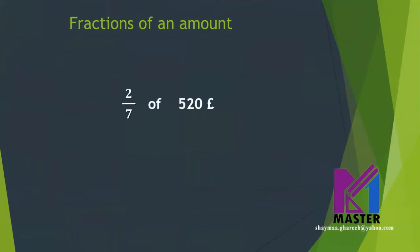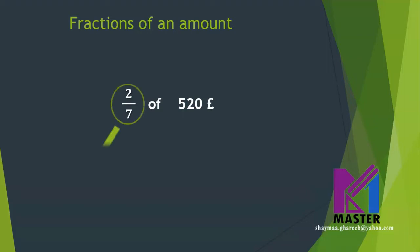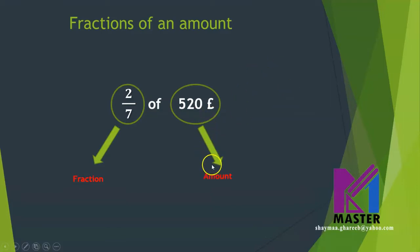What are fractions of an amount? Look at this question: 2 sevenths, or 2 over 7, of 520 pounds. So this is a fraction and this is the amount. Fractions of an amount means part of an amount. So we need to know how much exactly 2 sevenths of 520 pounds is. In order to understand fractions of an amount, identify the fraction part and the amount part.